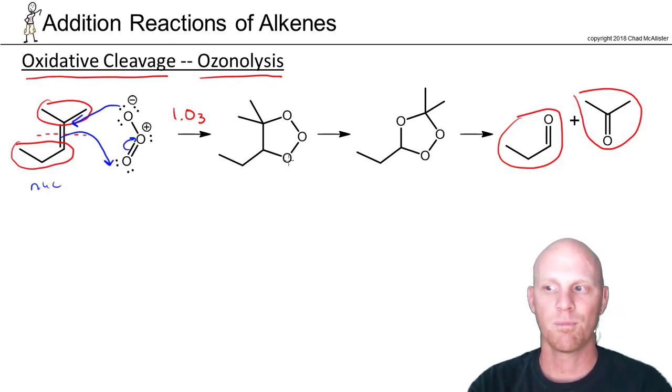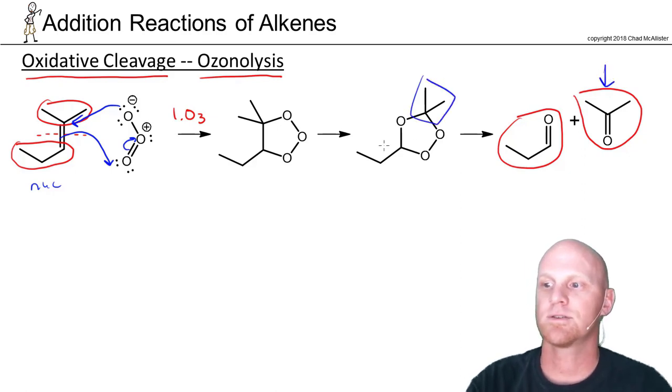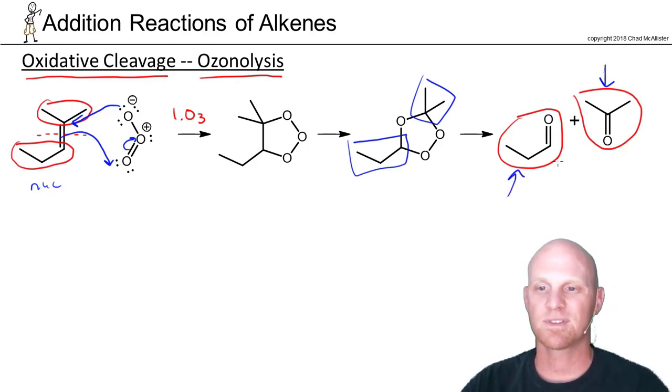This little intermediate is going to break down and reform a ring here. We don't need to know the mechanism of that and form a very similar looking intermediate. But we can kind of see how this side here is going to end up looking like this. And we can kind of see how this side here is going to end up looking like so. The mechanism besides that first step is not the most important thing in the world here.